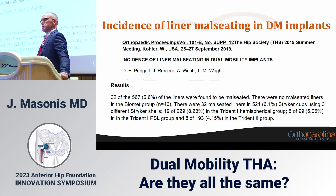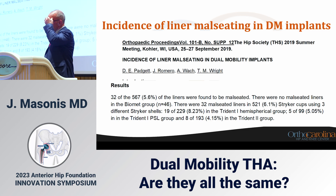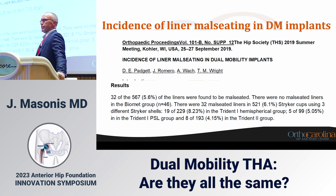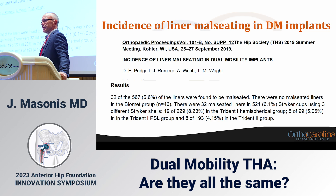The incidence of liner mouse seeding seems to be linked to ion production. From the Hip Society 2019 data: 5.6% of liners were mouse-seeded overall. There were no mouse-seeded liners in one design — the Zimmer Biomet group — while there were 32 mouse-seeded liners at 6.1% in the Stryker design, utilizing different shells including the PSL or the Trident.